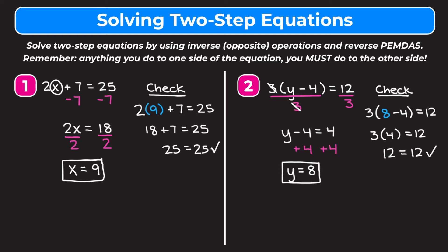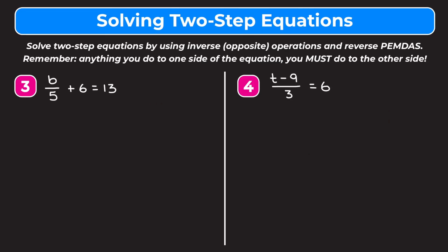Example three is b divided by 5 plus 6 is equal to 13. Using reverse PEMDAS, we start by getting rid of this plus 6 by subtracting 6 from both sides, because addition and subtraction are inverse operations. On the left, a 6 being added and a 6 being subtracted cancel out, leaving b over 5. On the right, 13 minus 6 is 7. So we have b divided by 5 is equal to 7.